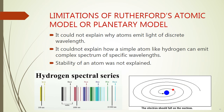Rutherford's model was a success, but there were a few limitations. First, it could not explain why atoms emit light of discrete wavelengths. Second, it could not explain how a simple atom like hydrogen, which has only one electron, can emit a complex spectrum of specific wavelengths — instead of one line, there are multiple lines in its spectrum.